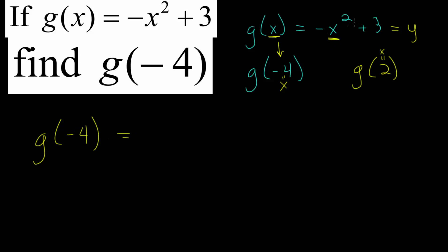Anywhere we see an x, we will replace it with negative 4. And one common mistake here is mixing up the negative signs. So we need to be careful. Whenever we substitute something in, my advice is to always put it in parentheses, especially if it's a negative number. But even if it's positive, it's a good habit to get into. So we substitute it in. x is negative 4. And now we just simplify.